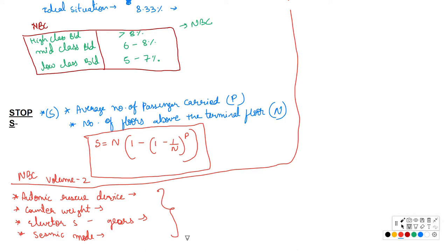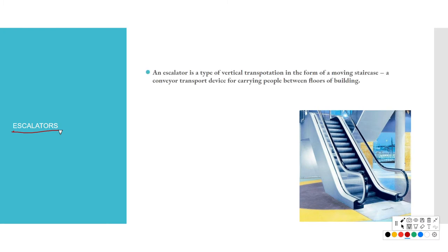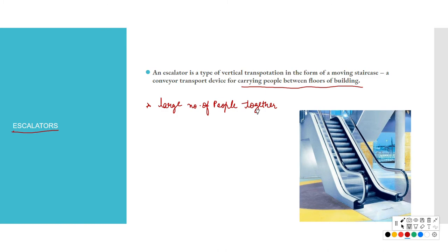Next, let's discuss escalators. Escalators are moving staircases. As a type of vertical transportation in the form of moving staircases, they are a conveyor transport device for carrying people between floors of a building. Escalators have the capacity of moving a large number of people together. Unlike elevators, there is no waiting time required. They are usually called revolving staircases.